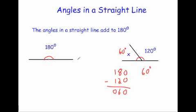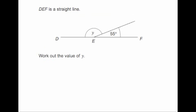So the angles in a straight line will always add to 180 degrees. Let's have a look at a typical exam question. The question says DEF is a straight line. So as you can see here DEF is a straight line.